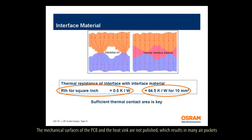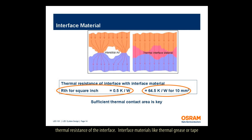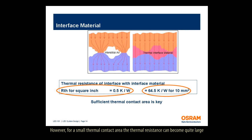The mechanical surfaces of the PCB and the heat sink are not polished, which results in many air pockets between the surfaces. As air is a bad heat conductor, the air pockets increase the thermal resistance of the interface. Interface materials like thermal grease or tape are commonly used to fill the pockets. However, for a small thermal contact area, the thermal resistance can become quite large even if these interface materials are used.